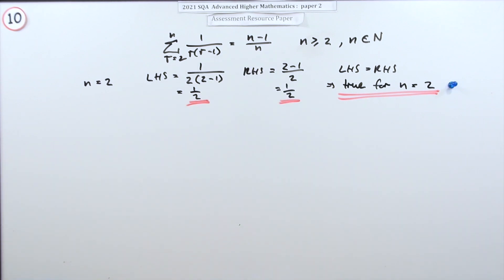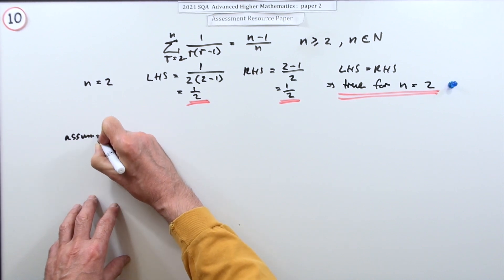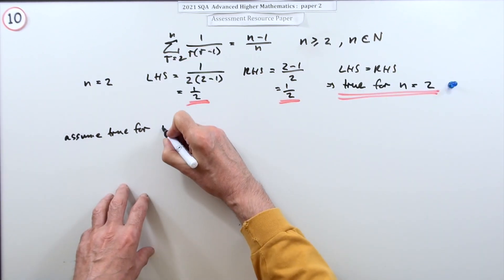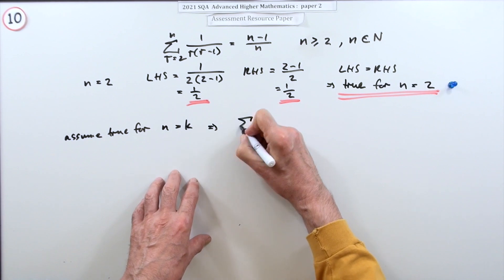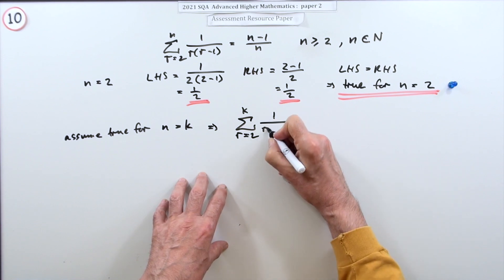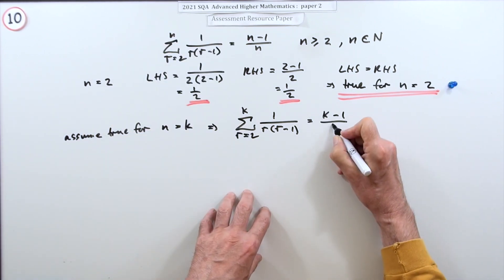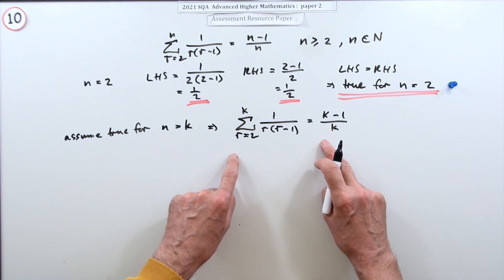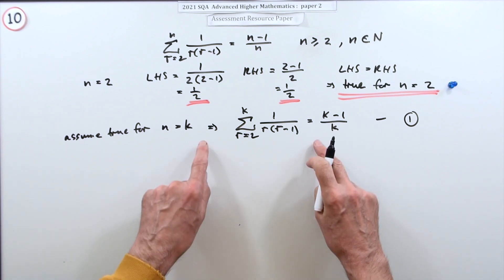So you've checked it works right at the beginning. Now you consider some random point further on, so now you're going to say, let's just assume it's true for some value of n further on, for n equals k. If that were the case, what that would mean is that if you were to go from r equals two to k of one over r times r minus one, the answer should be k minus one upon k. This is what you're assuming - this is what's called your inductive hypothesis, and this is what you'll be calling in. So we assume that it actually works. We don't know, we'll find out.